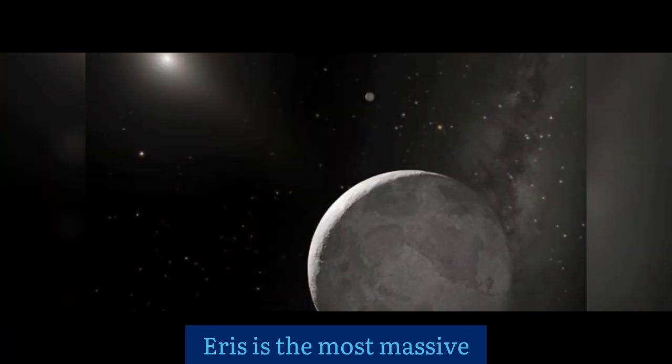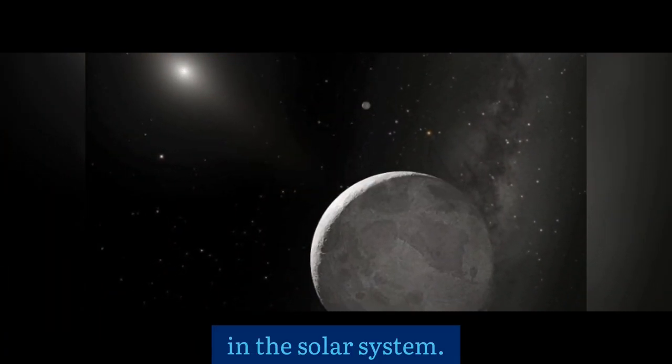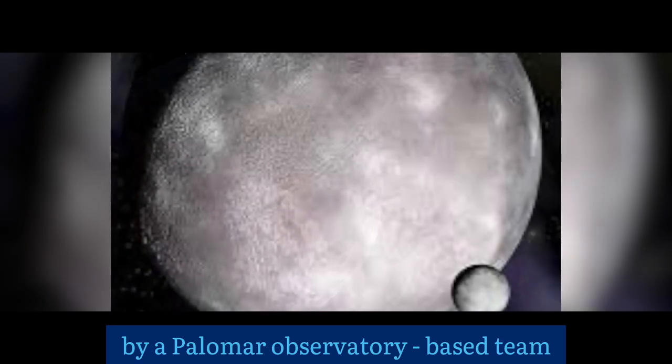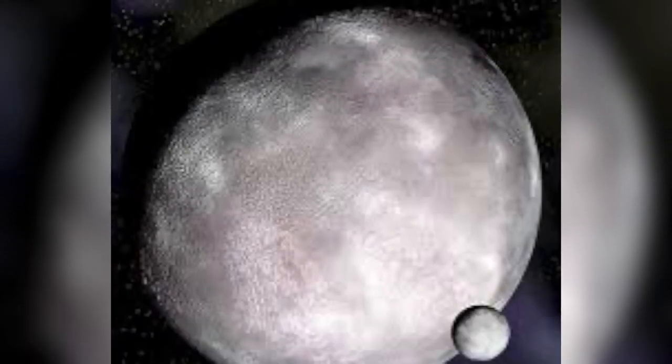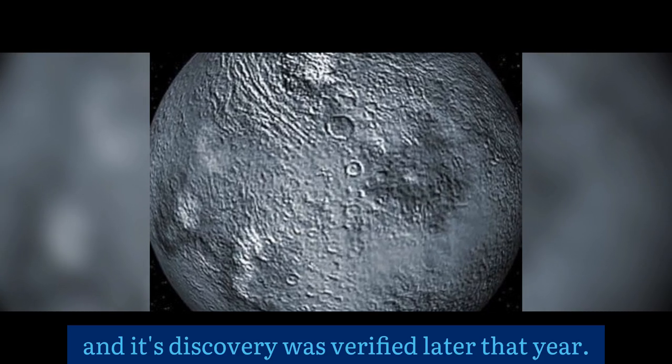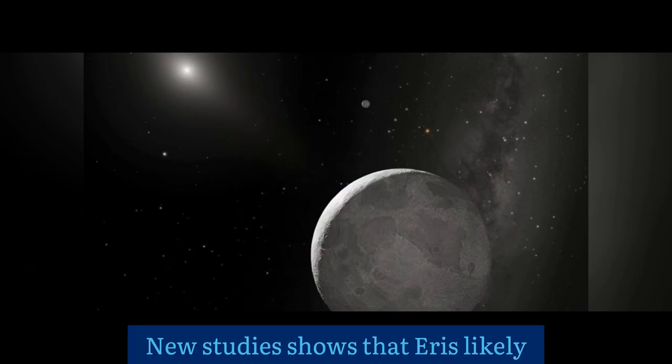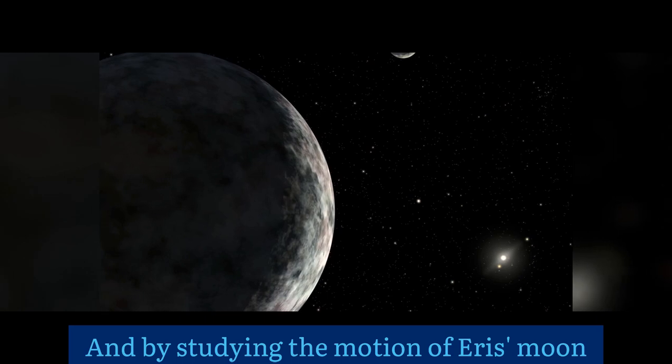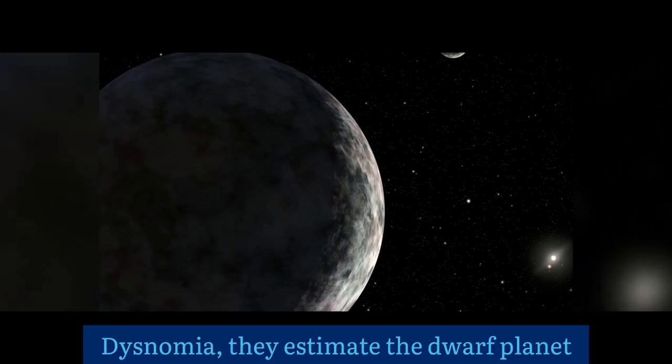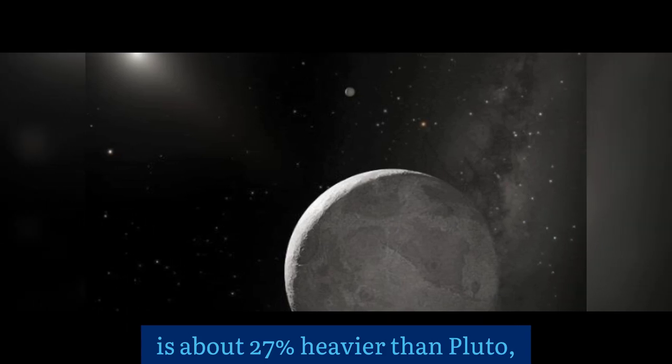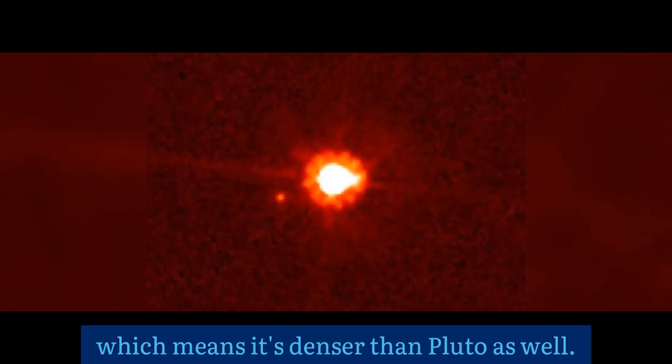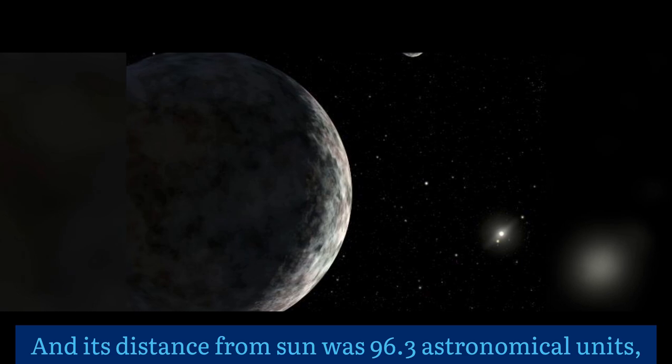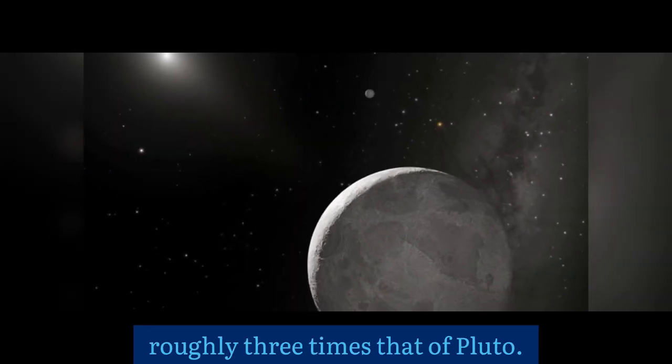Eris is the most massive and second-largest known dwarf planet in the solar system. Eris was discovered in January 2005 by a Palomar Observatory based team led by Mike Brown, and its discovery was verified later that year. New studies show that Eris likely is a spherical body, and by studying the motion of Eris's moon, Dysnomia, they estimate the dwarf planet is about 27% heavier than Pluto, which means it's denser than Pluto as well. Its distance from the Sun was 96.3 astronomical units, roughly three times that of Pluto.